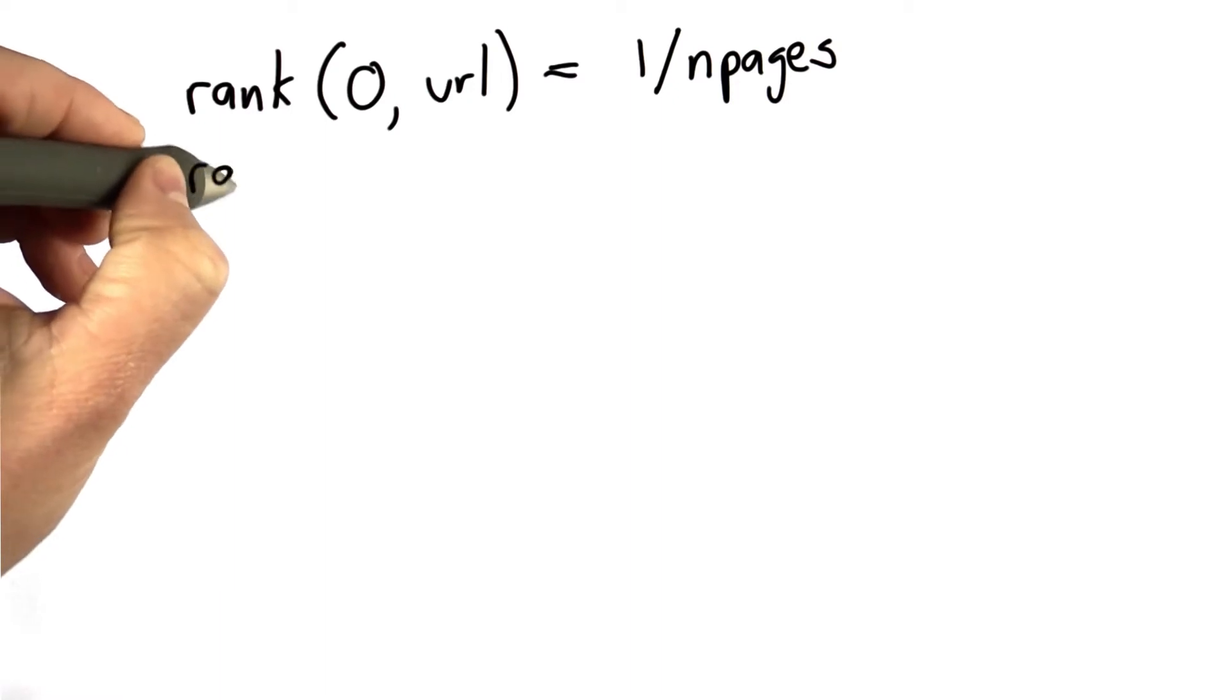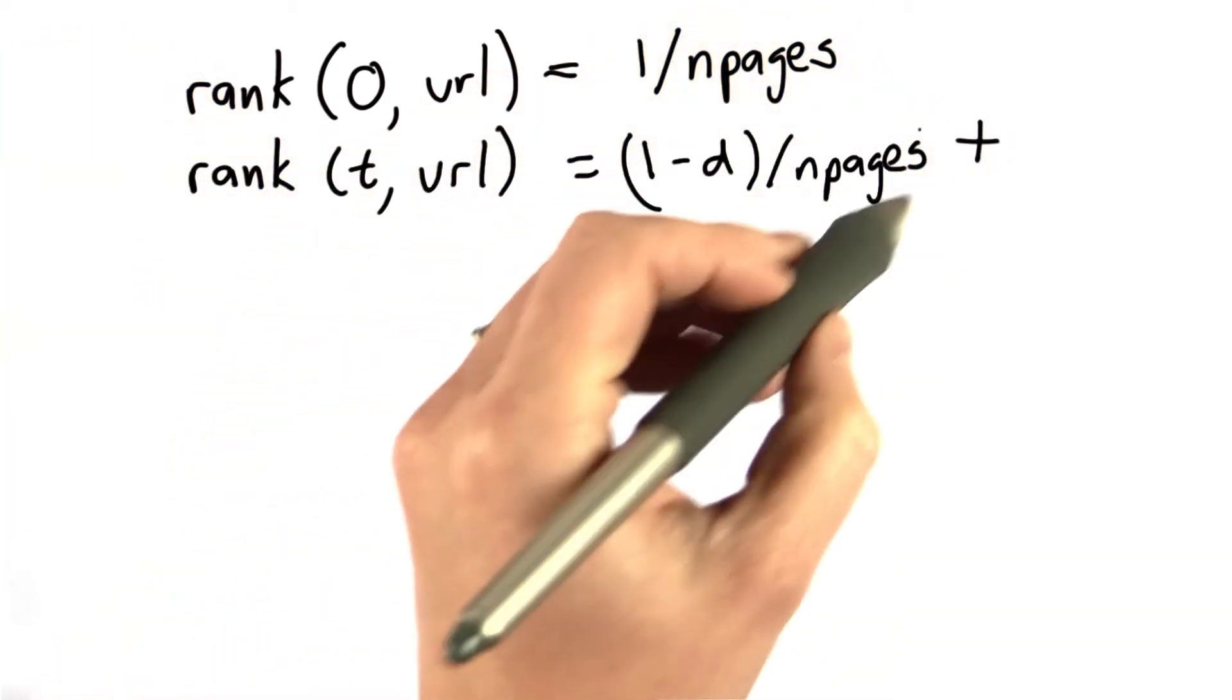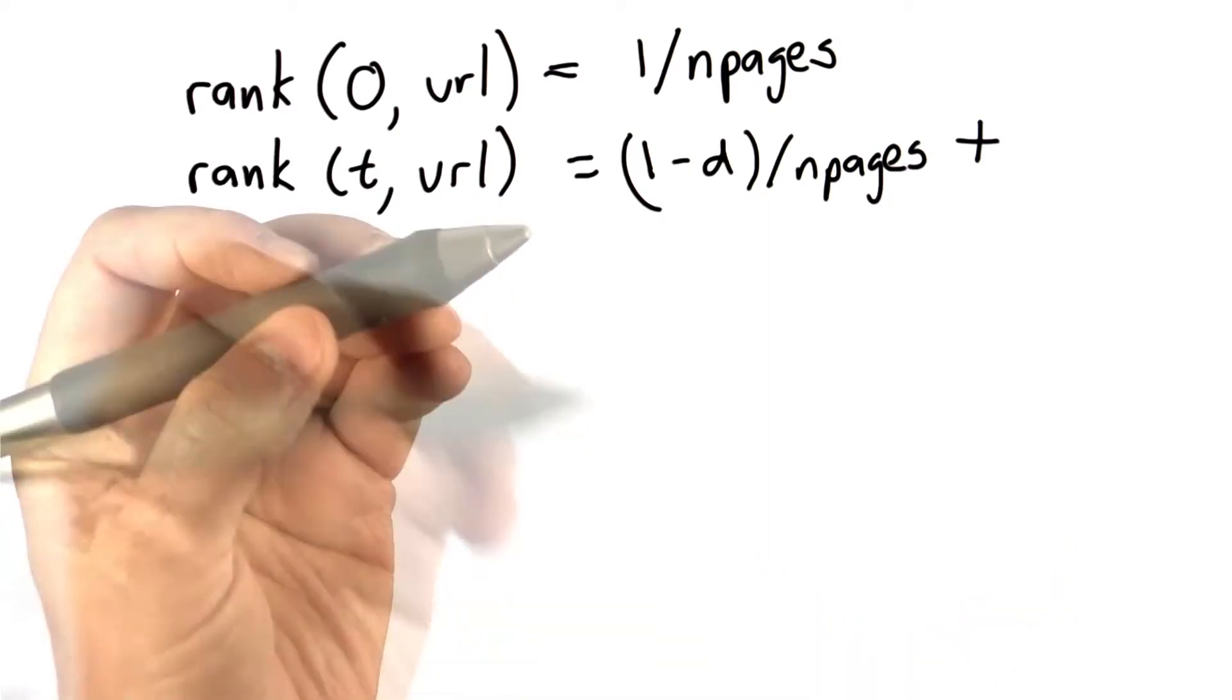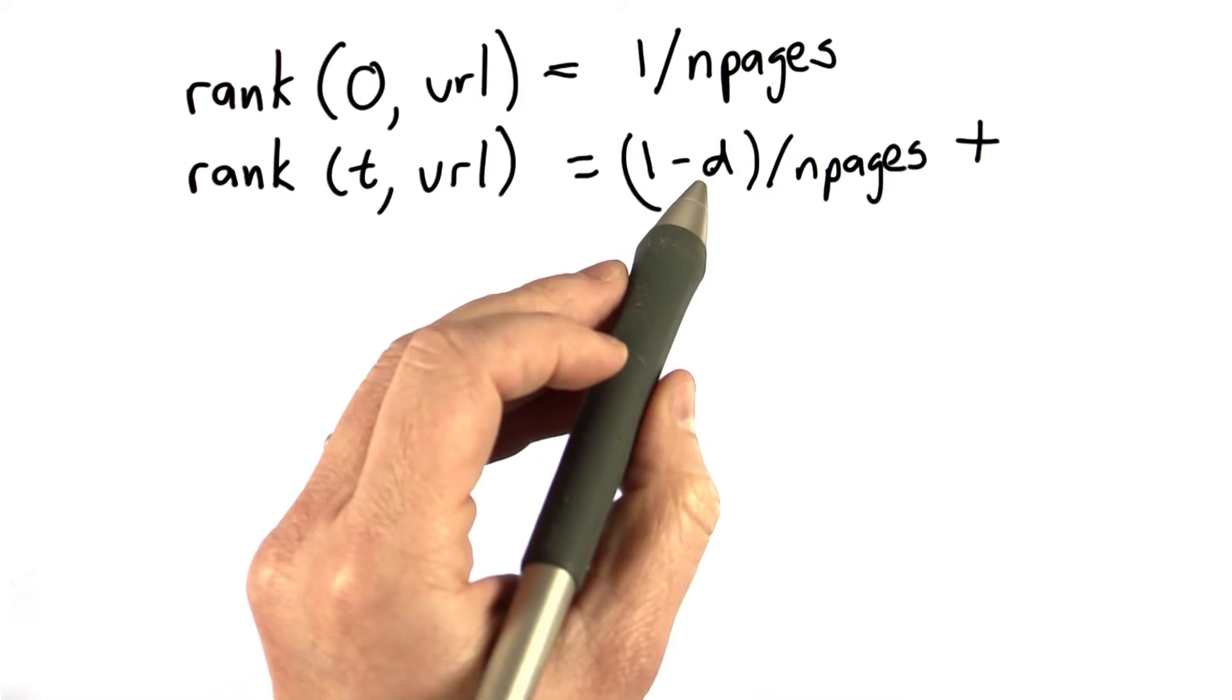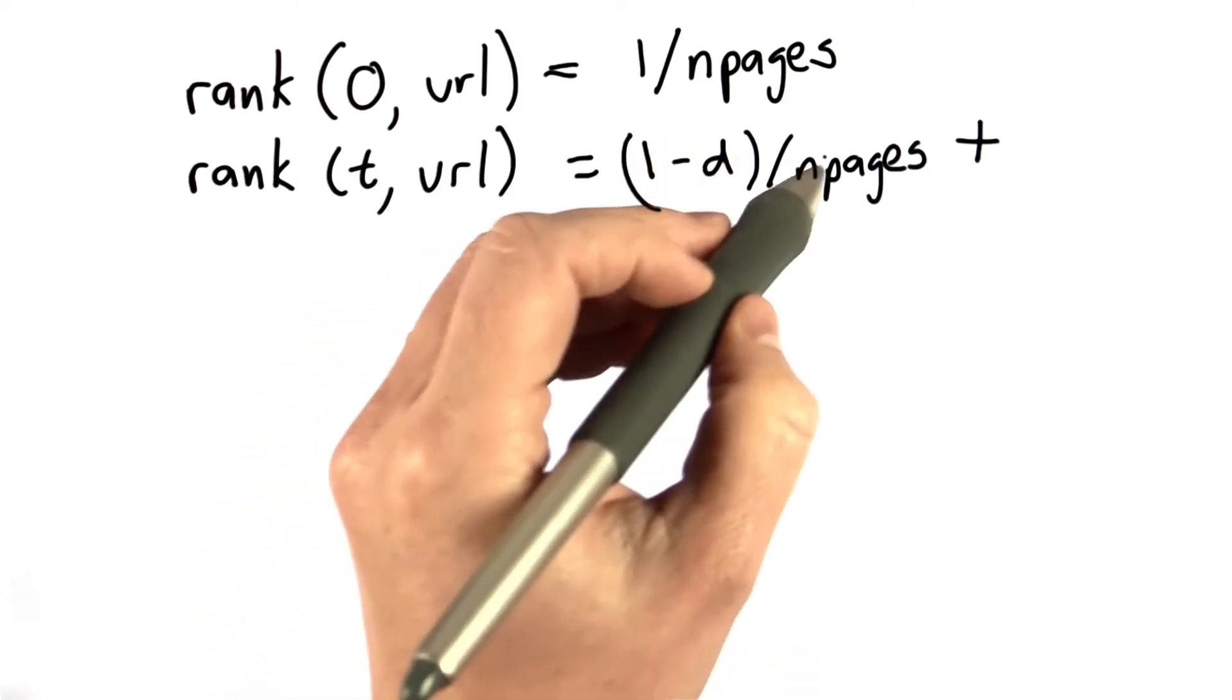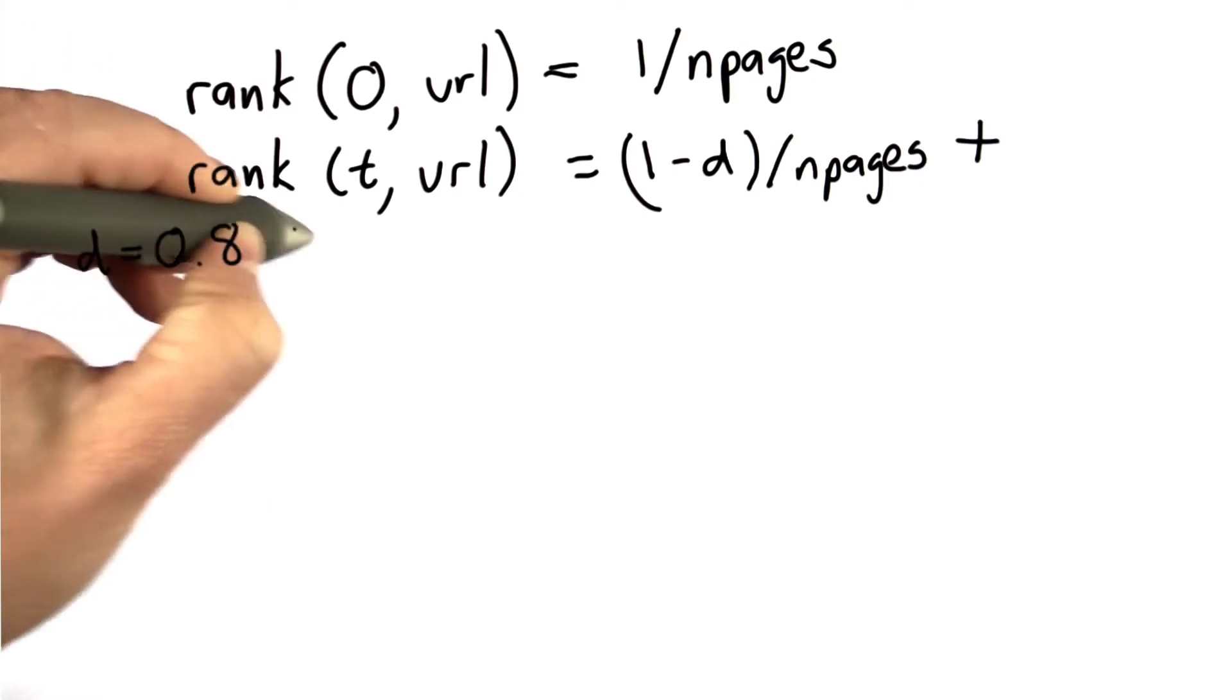And we updated the rank at time step t by adding the probability that the random surfer starts over and randomly picks that page. So that's 1 minus d is the probability of starting over divided by nPages, how many pages there are. And remember that d is our damping constant, and we'll decide that d is 0.8. That's the damping constant.